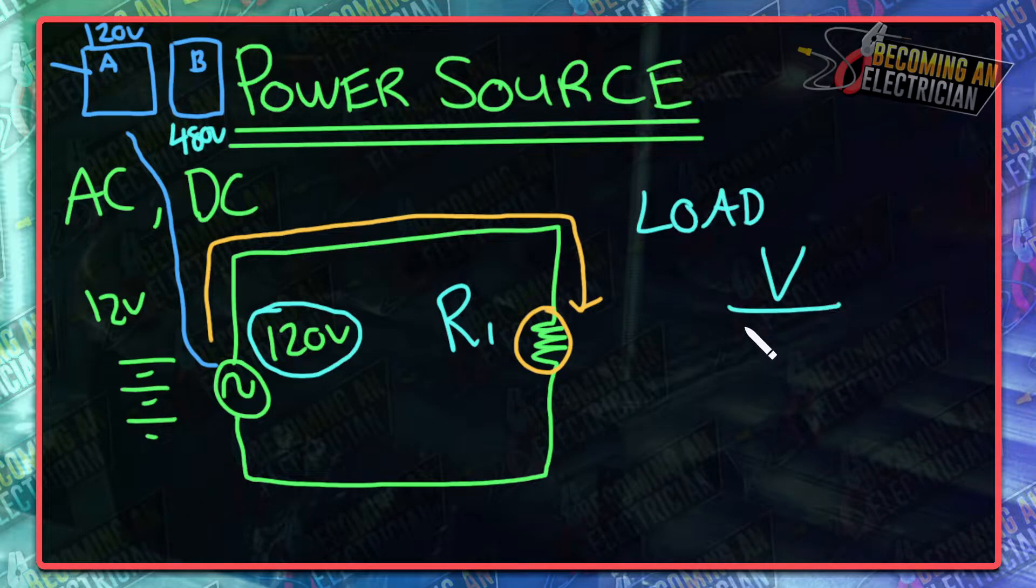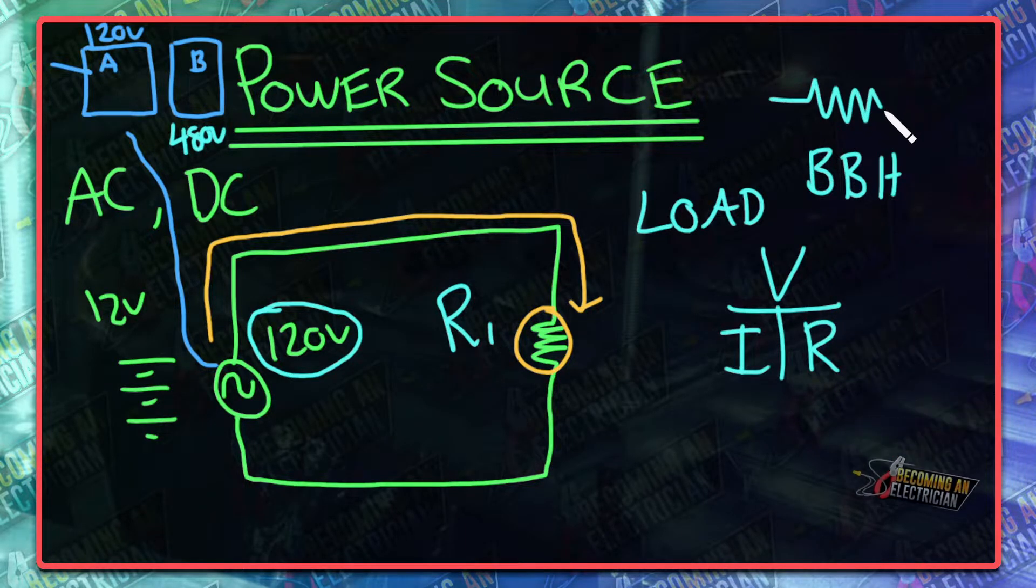So for example we have V, I, and R right? So we can apply Ohm's law just directly to that. And something that is purely resistive is something like a baseboard heater. You're going to see BBH out there and so what this is doing is it's literally like a resistor, that's kind of how they would draw it.